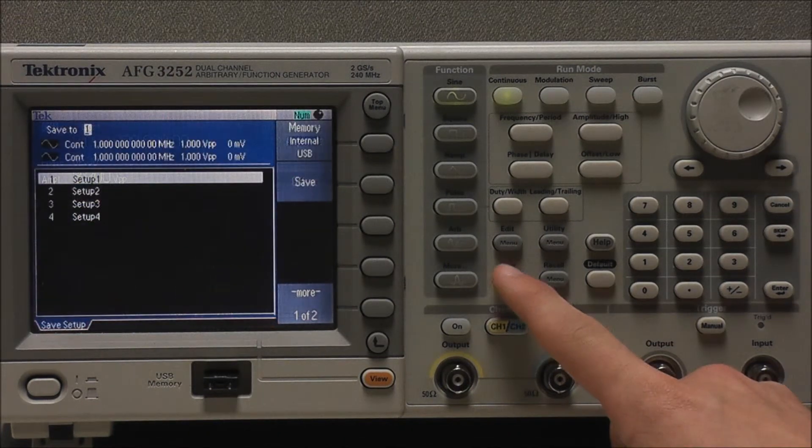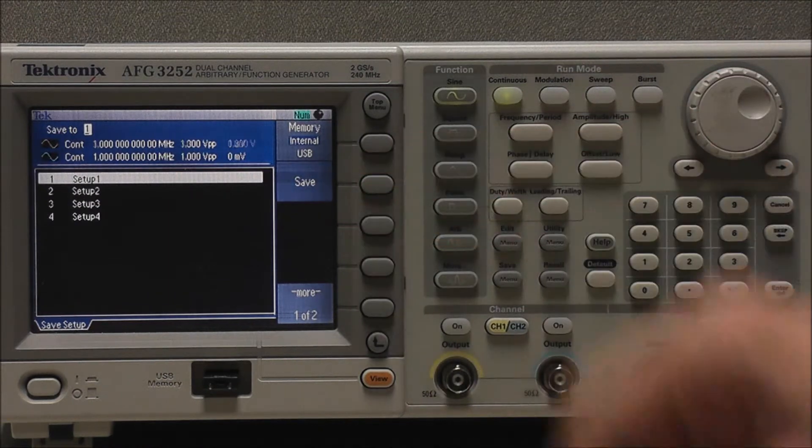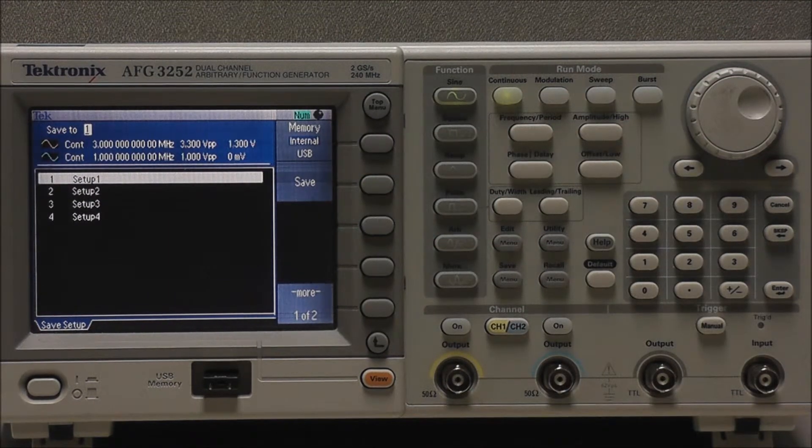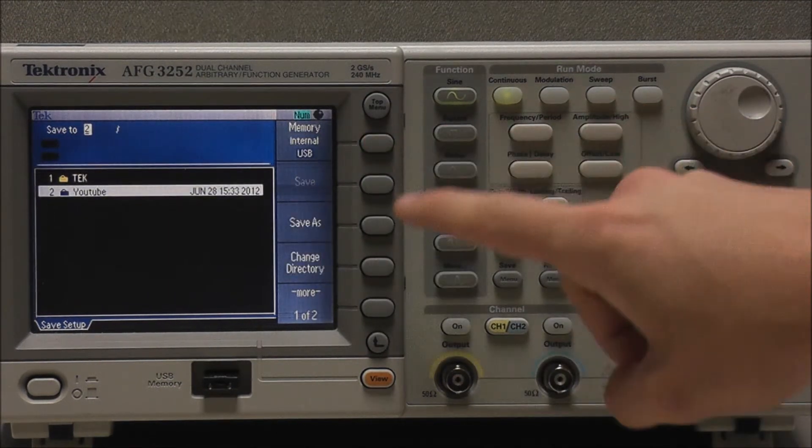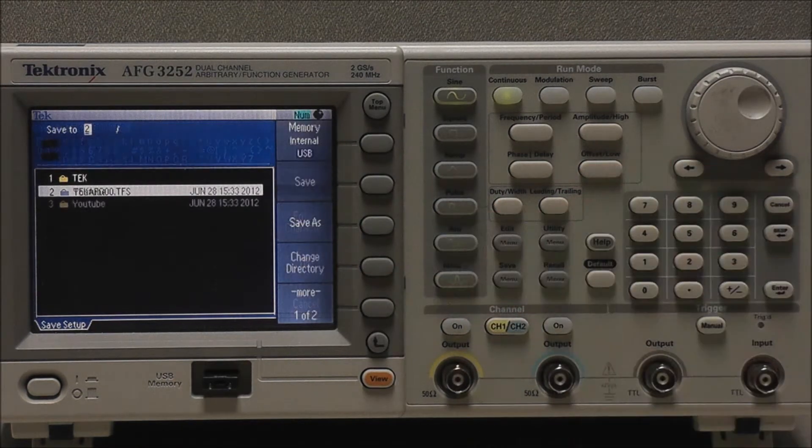For an internal memory save, select save, choose what setup we want, and save. Or for a USB memory save, we could select memory, save as, choose our file name, and select OK.